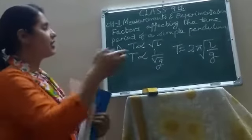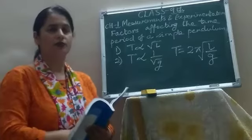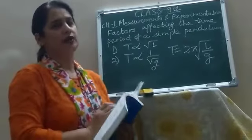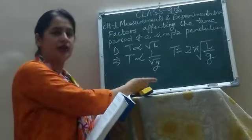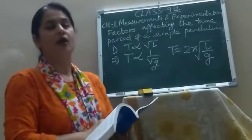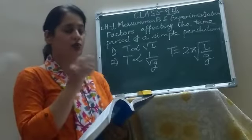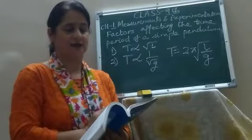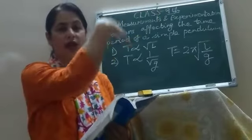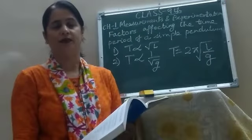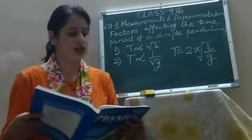The second factor is acceleration due to gravity. The time period is inversely proportional to the square root of the acceleration due to gravity. Less acceleration due to gravity means more time period; more acceleration due to gravity means less time period. For this reason, the pendulum clock goes slow when taken to the mountains — the time period of oscillation increases. When we go to high altitudes in mountains or deep into mines, the value of G decreases, and therefore the time period of oscillation increases.